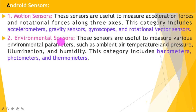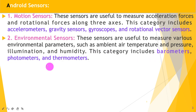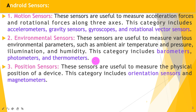The second type is environmental sensors, useful to measure various environmental parameters such as ambient air temperature, pressure, illumination, and humidity. This category includes barometers, photometers, and thermometers. The third category is position sensors, useful to measure the physical position of a device. This category includes orientation sensors and magnetometers.